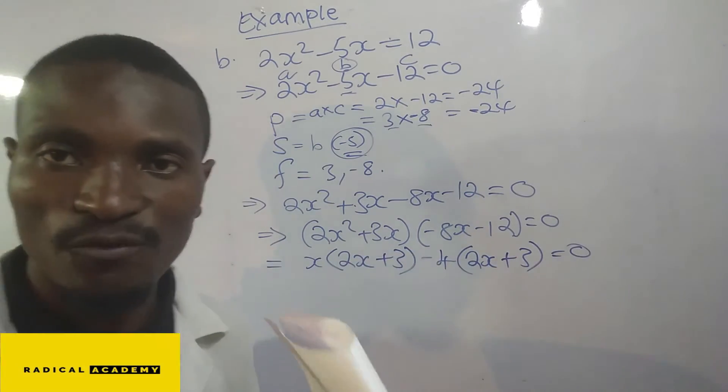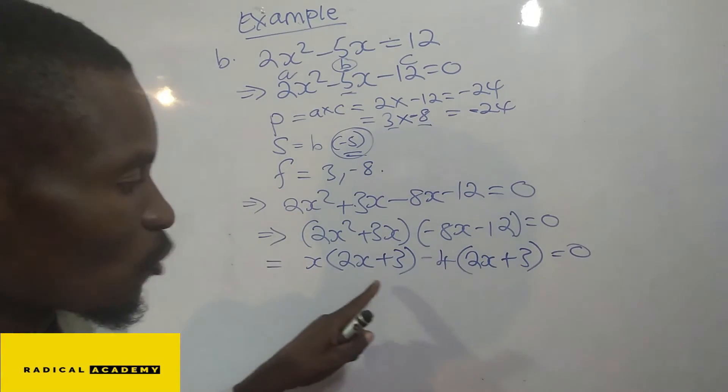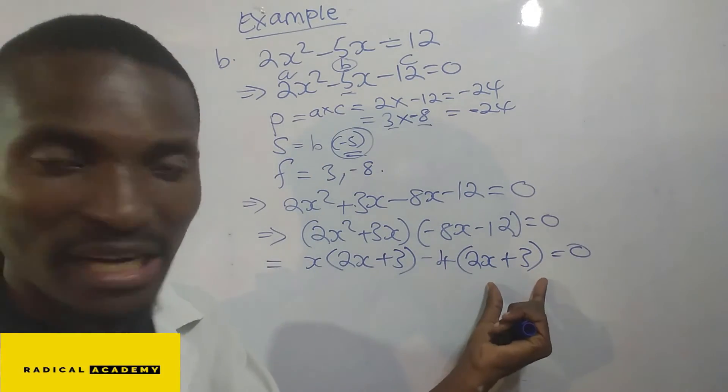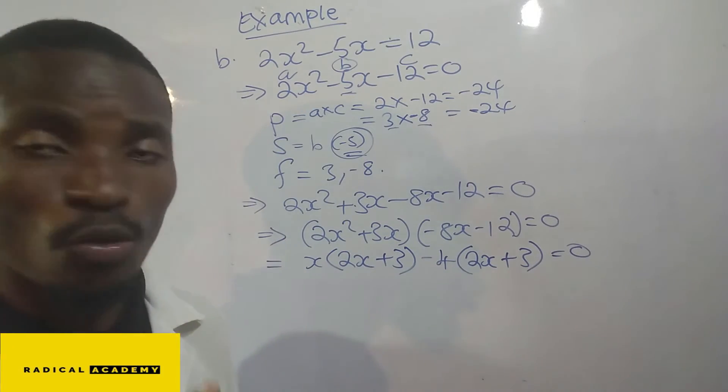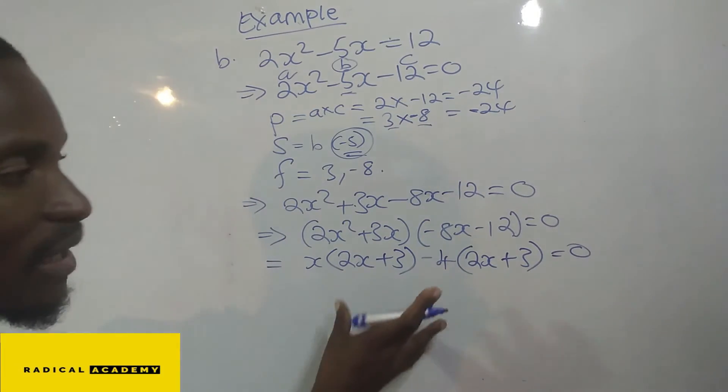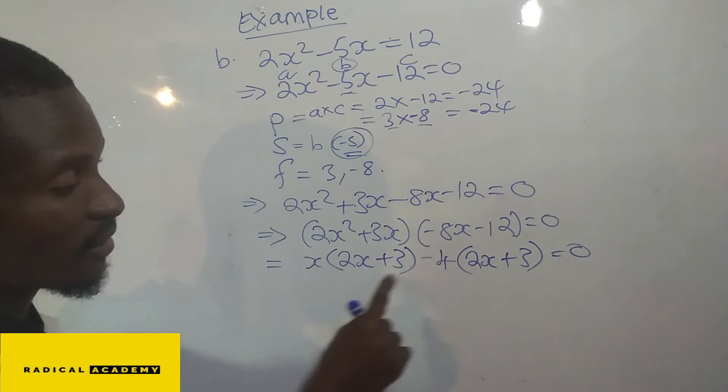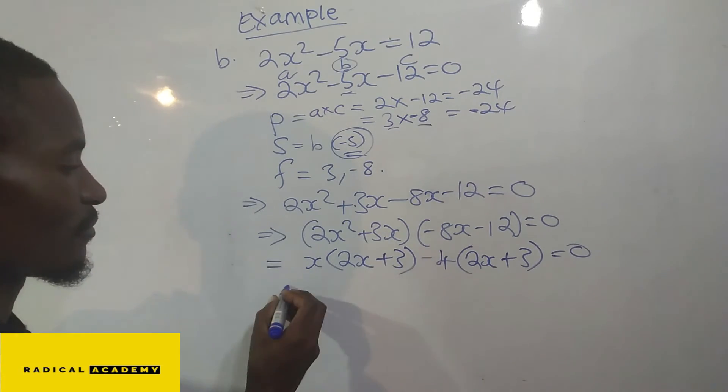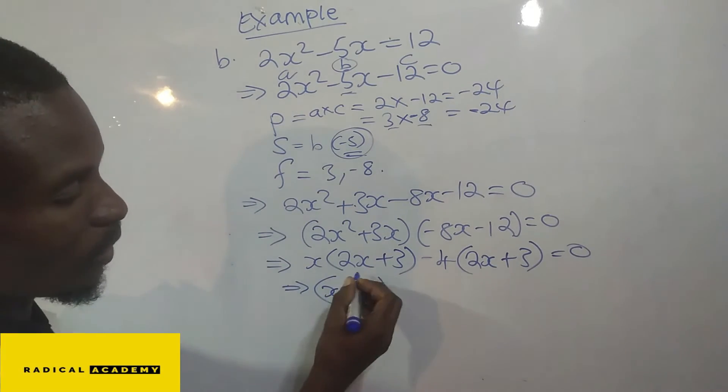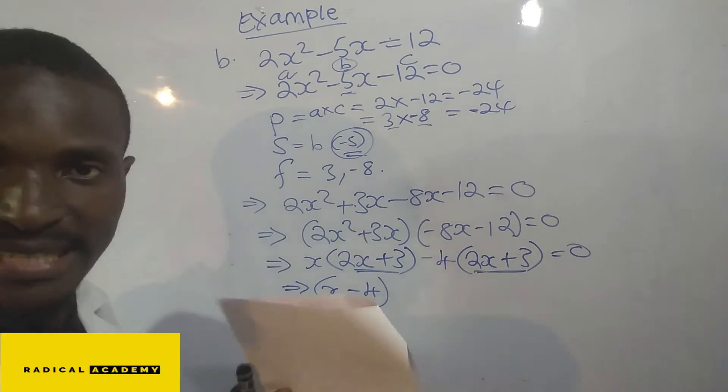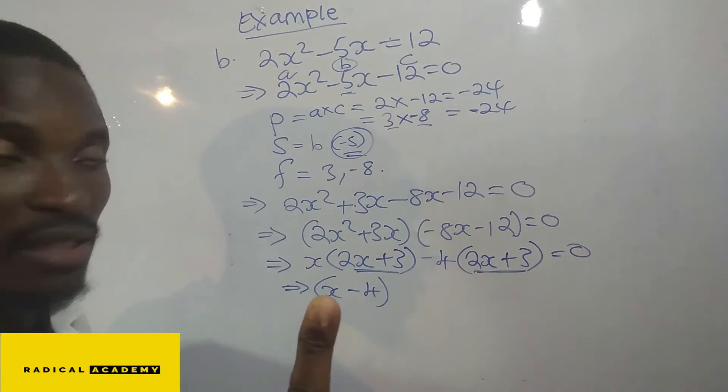So the key point of factorizing now is that you have to make sure that what is in the bracket, they are just the same. And once you do that, you are home and run. So what you do now is that you group what is outside, you put them together. And then what is in the brackets, they are just the same, so you just pick one of those.